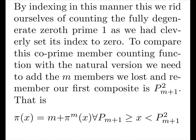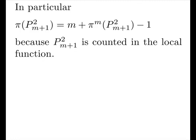That is, π(x) is equal to M plus our π function for everything less than our next prime squared. In particular, π of our next prime squared equals M plus our π of M minus 1. This is because our next prime squared is counted in the local function, but obviously it's composite, not counted in the global function.